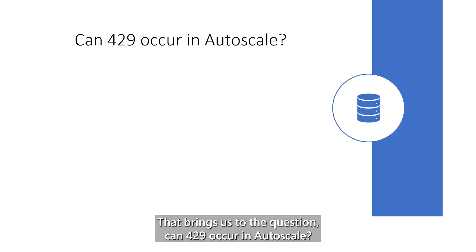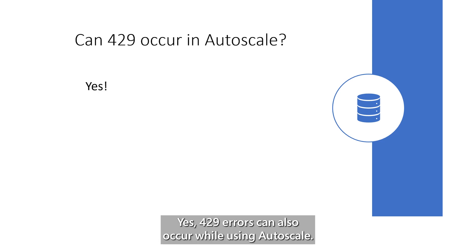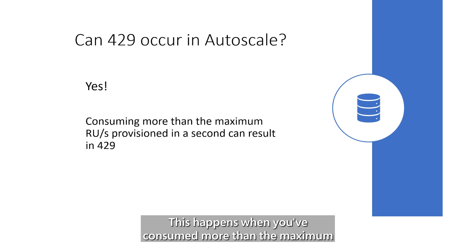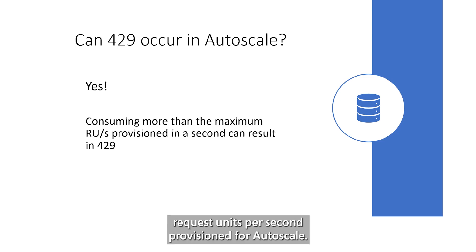That brings us to the question: can 429 occur in Autoscale? Yes, 429 errors can also occur while using Autoscale. This happens when you've consumed more than the maximum request units per second provisioned for Autoscale.